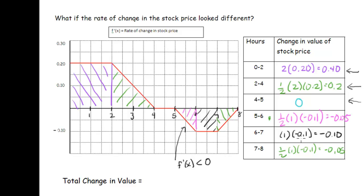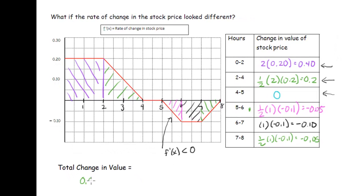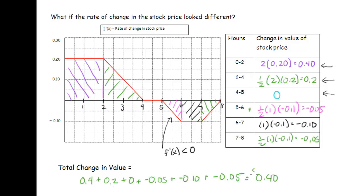The total change in value over the whole day is the sum of all these different changes: 0.40 plus 0.20 plus 0.0 plus negative 0.05 plus negative 0.10 plus negative 0.05, which gives us 0.40. So over the entire day, our stock price increased by 40 cents per share.